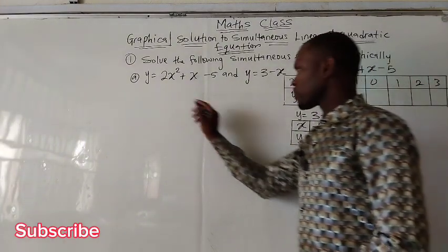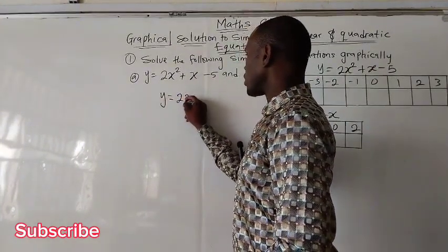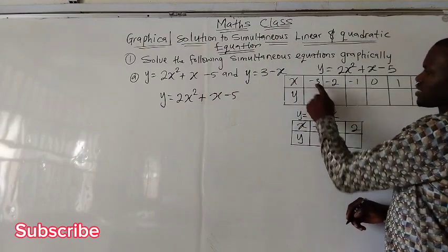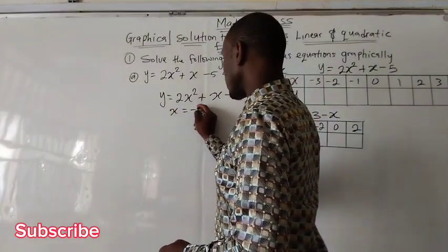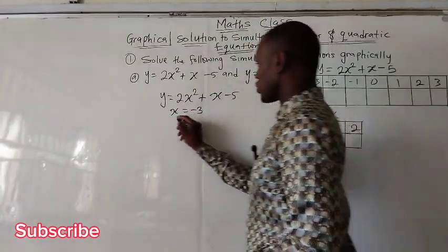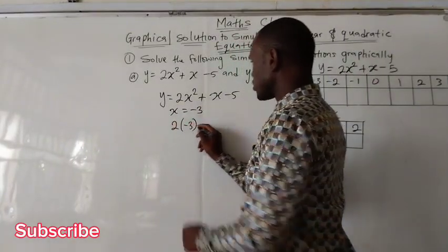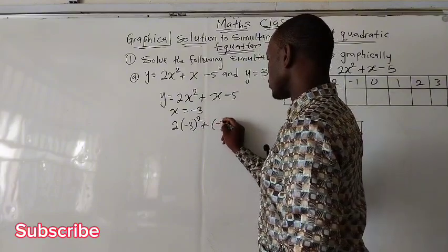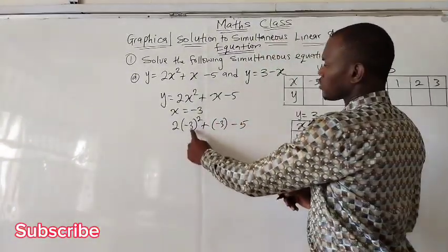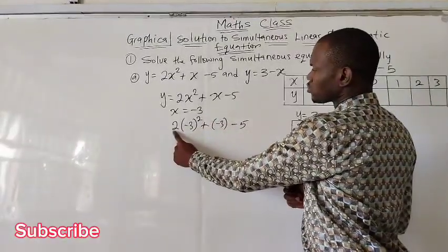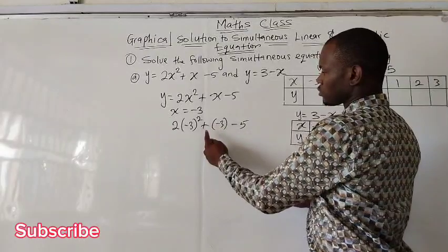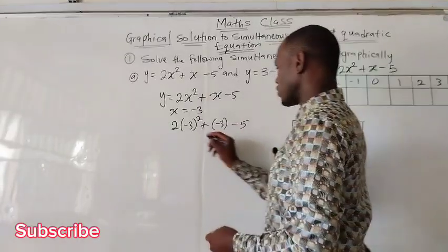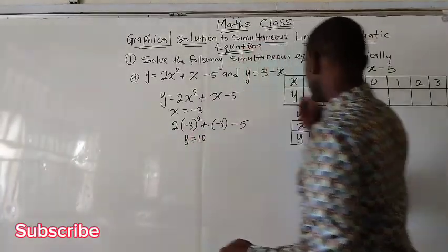Let's solve the quadratic first. We have y equal to 2x squared plus x minus 5. When x is negative 3, we have 2 times negative 3 squared plus negative 3 minus 5. 3 squared gives us 9; 9 times 2 gives us 18. Plus minus is minus, so 18 minus 3 gives us 15; 15 minus 5 gives us 10. So y is 10.